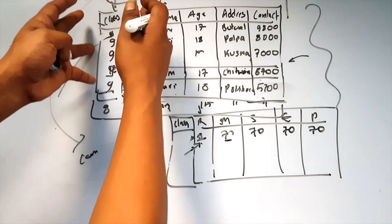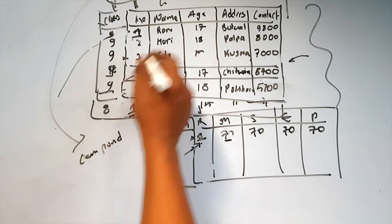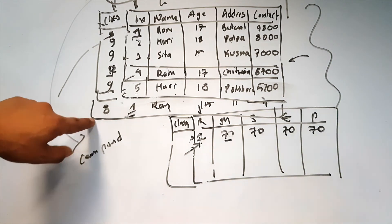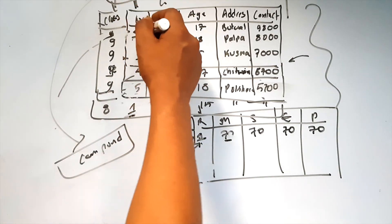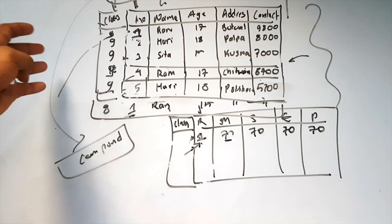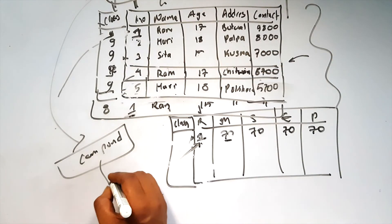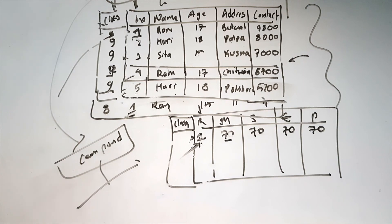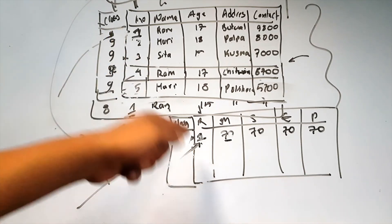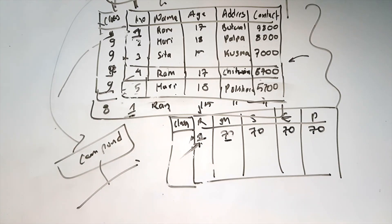Compound key: two fields are combined to uniquely identify a record. If you have any class or roll number, it can be a key — a primary key. If two fields are needed together to uniquely identify a record, that is called a compound key or composite key. So we have covered primary key, foreign key, and compound key with examples.